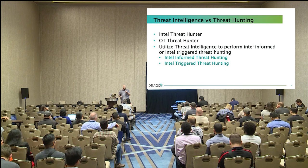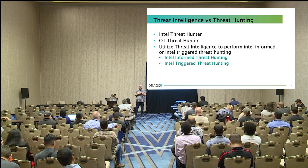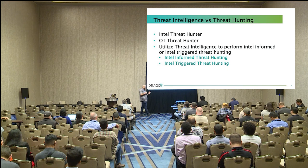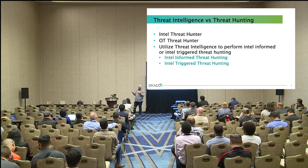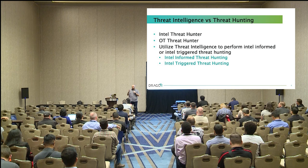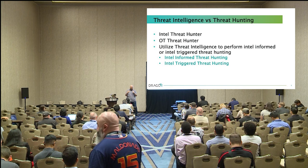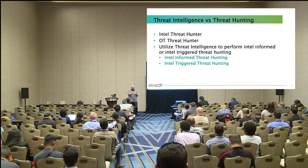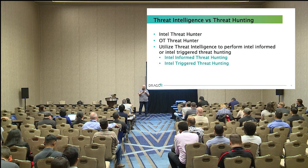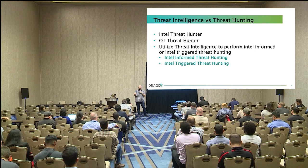There are two ways I like to use intel: intel-informed and intel-triggered. An intel-informed threat hunt is where you take an established threat — for example, XENOTIME, the group responsible for the TRISIS attacks — collect all the intel reports, gather up all the tactics, techniques, and procedures, then build your hunt around that. An intel-triggered threat hunt is where an emerging threat pops up and you get a report saying, for example, 'this activity group is targeting the electrical sector in Australia.' You take that intel report, find the TTPs, and look directly for that activity — it's triggered by an emerging threat.